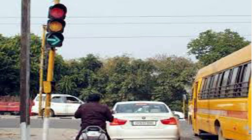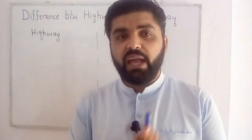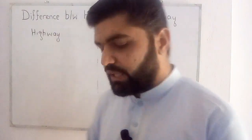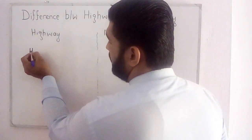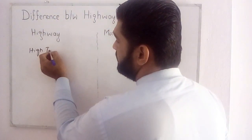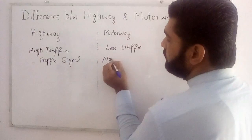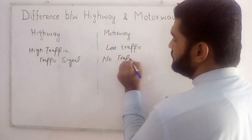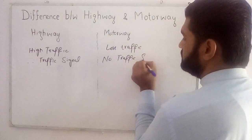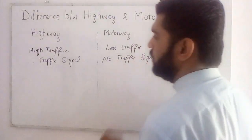The third difference between motorway and highway is that on a highway there will be more traffic and also traffic signals, which are used to control the traffic. While on a motorway there will be less traffic compared to a highway, and there will be no traffic signals. This is the third difference between highway and motorway.